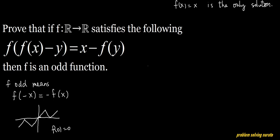Our goal is to prove f(0) = 0. Naturally we plug in x equals zero or y equals zero. Let me begin by setting y equals zero. We get f(f(x)) = x minus f(0). Just as commented above, whenever you see f(f(x)) equals something simpler, make use of it.